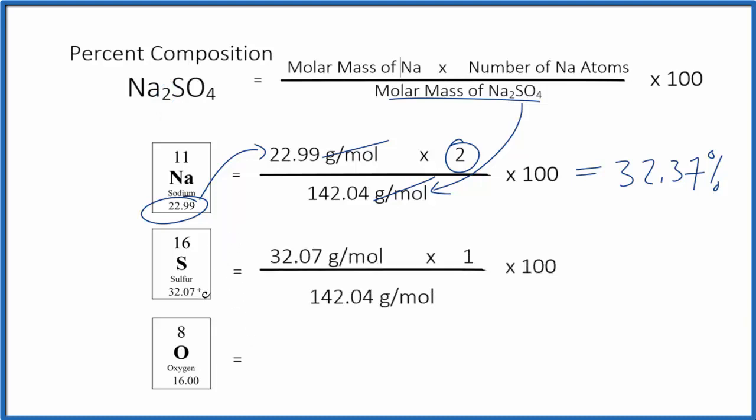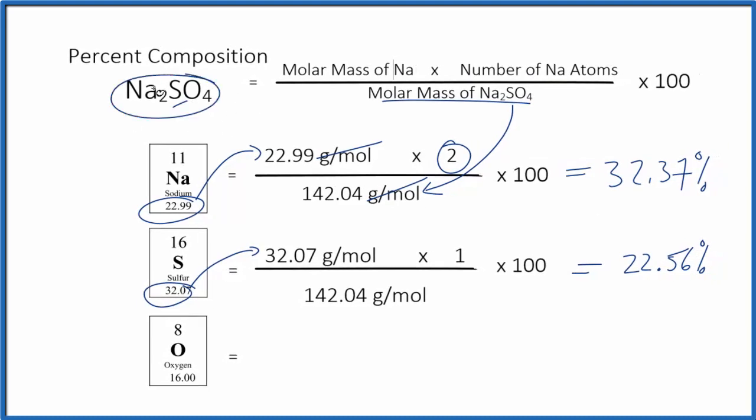For sulfur, it's the same thing. We take the mass of the sulfur, the atomic mass of sulfur, times the number of sulfur atoms. There's only one. We divide the top by the bottom, then multiply by 100, and we get 22.56%. That's the percent composition by mass of the sulfur here in sodium sulfate.